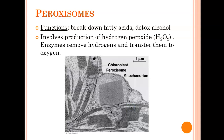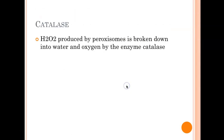Peroxisomes: they break down fatty acids and detox the body from alcohol, making hydrogen peroxide in the process. An enzyme called catalase further breaks hydrogen peroxide down into water and oxygen — and you knew that from the lab that you did.